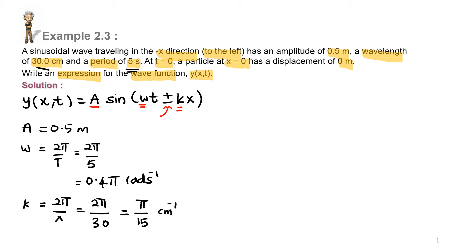Now, kita dah boleh tulis jawapan kita, equation ataupun expression of the wave function. So, the answer will be, y in terms of x and t is equal to 0.5 sin 0.4 pi t. The direction of the wave is in the negative x to the left. So, the sign will be positive here. So, 0.4 pi t plus pi over 15 x.